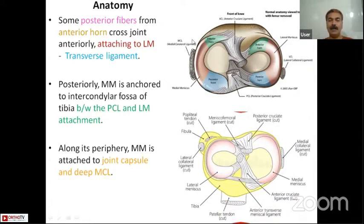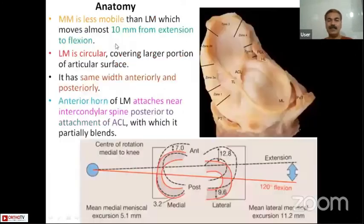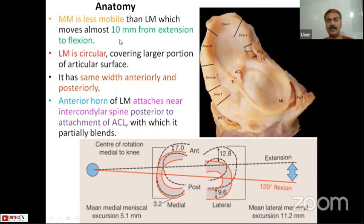Along its periphery, the medial meniscus is attached to the joint capsule and the deep MCL. As far as mobility is concerned, the medial meniscus is less mobile, whereas the lateral meniscus is more mobile — with almost 10 millimeters of excursion done by the lateral meniscus from flexion to extension.